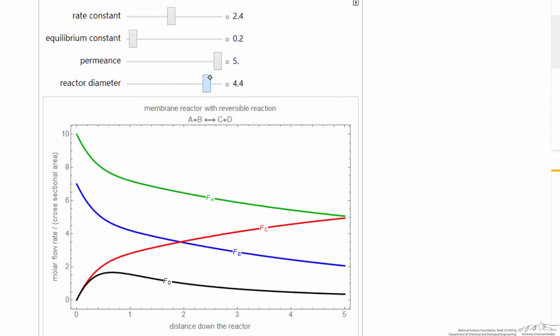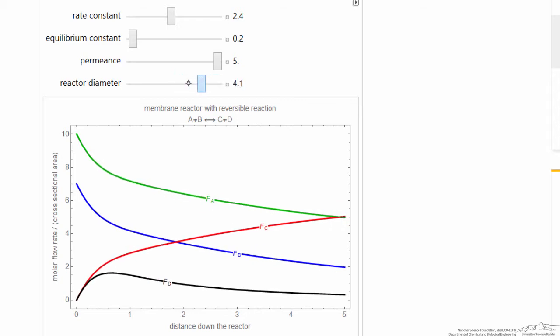So as I increase diameter, notice the flow rate of C is decreasing, the flow rate of D is increasing.